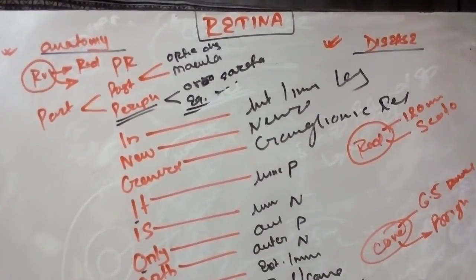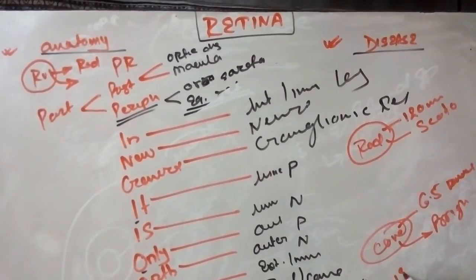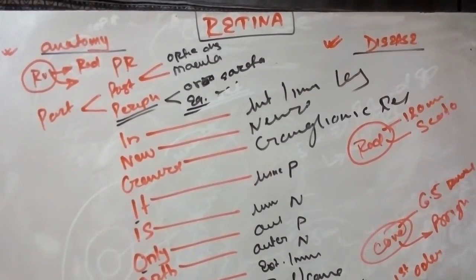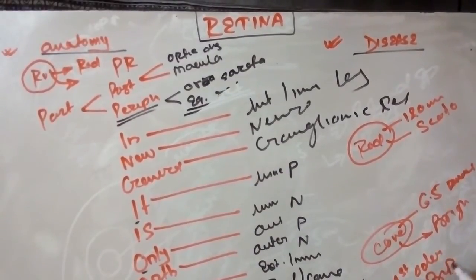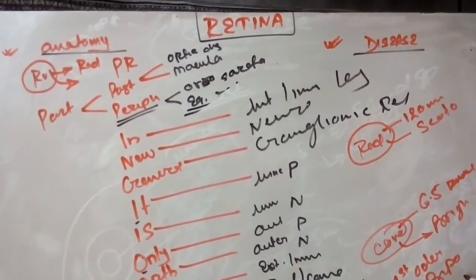The bipolar cell is very important for MCQs. It is the first order neuron of the visual pathway. This is all for the anatomical portion of the retina.